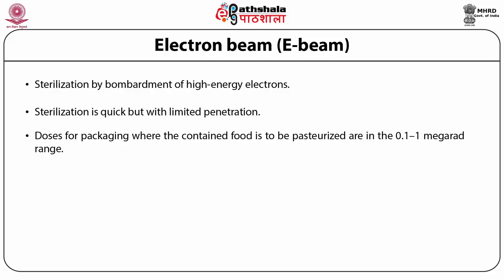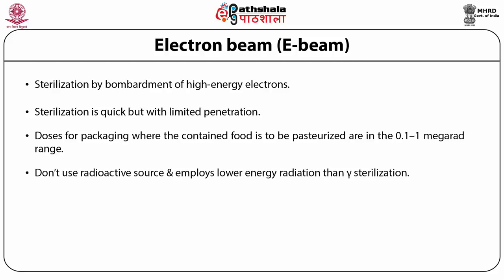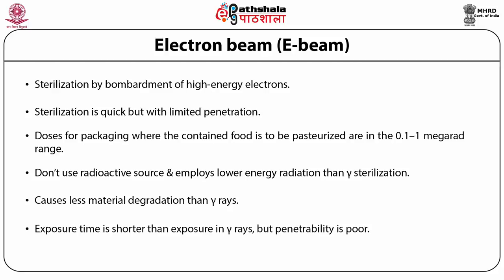There are several differences between E-beam and gamma sterilization. The E-beam process uses no radioactive source and employs lower energy radiation than gamma sterilization. It is claimed that electron beam sterilization causes less material degradation than gamma, thus reducing the risk of product damage. Exposure time for E-beam is shorter — plastic parts sterilized by electron beam are only exposed for minutes versus hours or days with gamma rays.